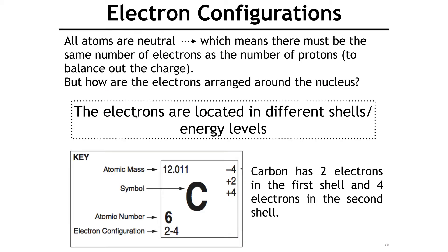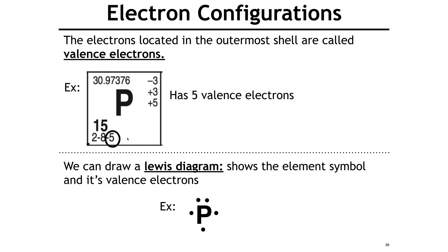On the periodic table you'll also see electron configuration in the bottom left corner. Electrons are located in different shells — the first shell can hold only two electrons, the next can hold eight. So this represents two in the first shell and four in the second. Valence electrons are the electrons in the outermost shell — just look at the last number listed. Based on the number of valence electrons we can draw a Lewis diagram: write the element and one dot for each valence electron. Phosphorus has five valence electrons — draw a P with five dots.